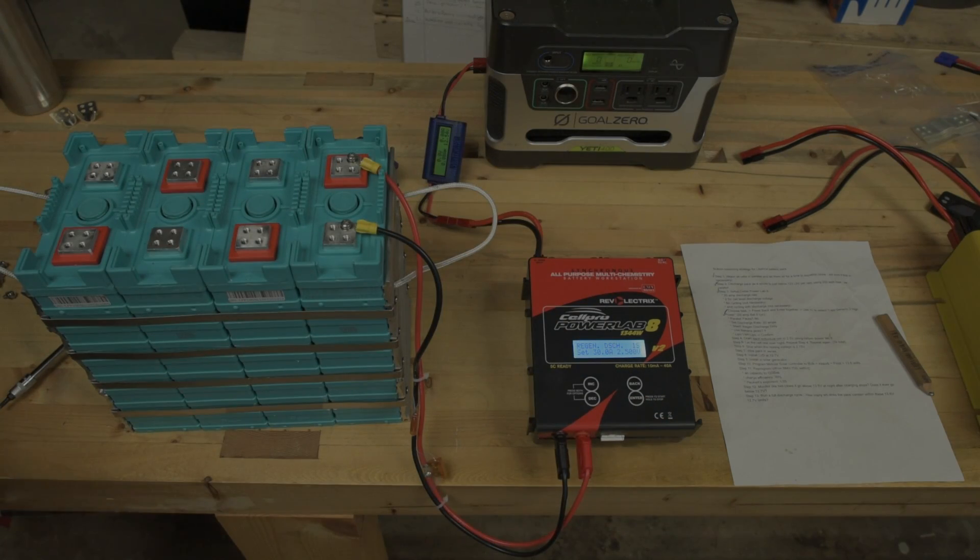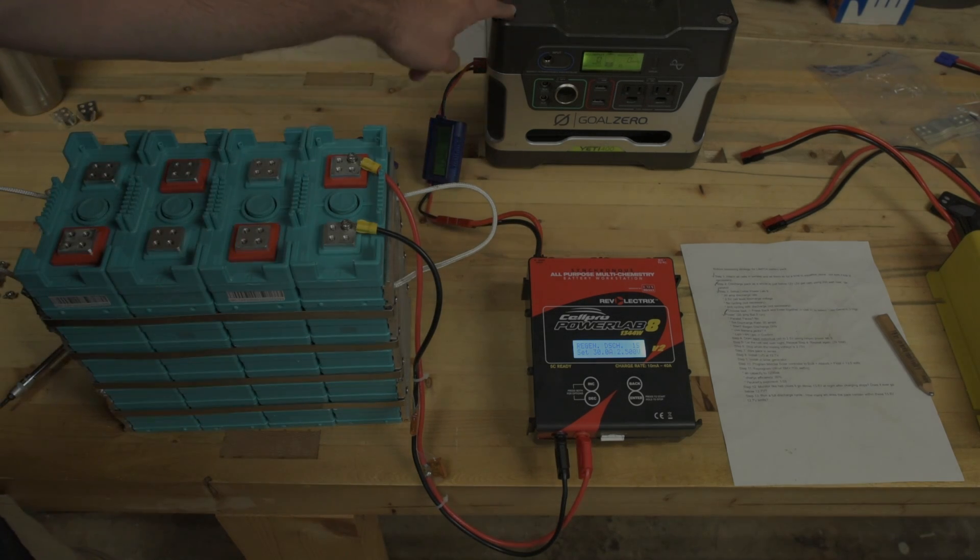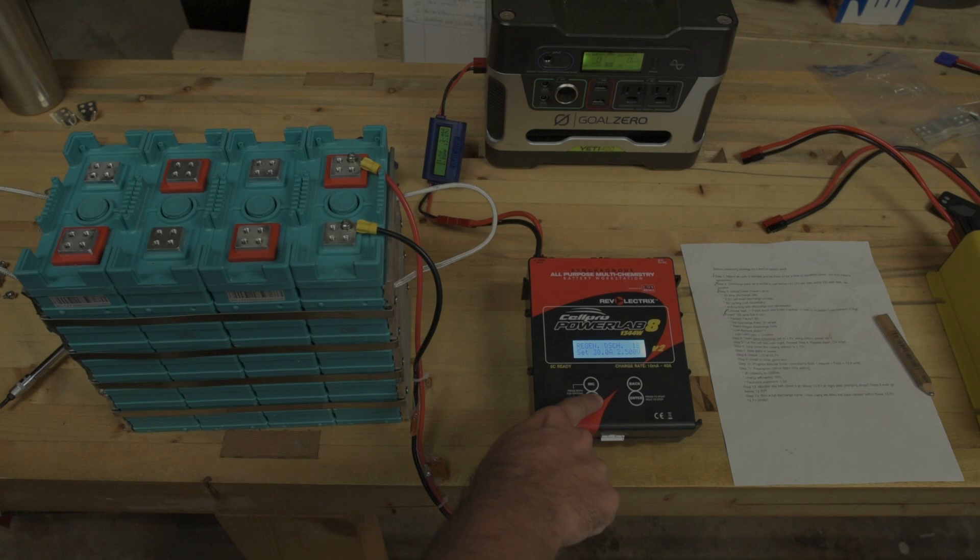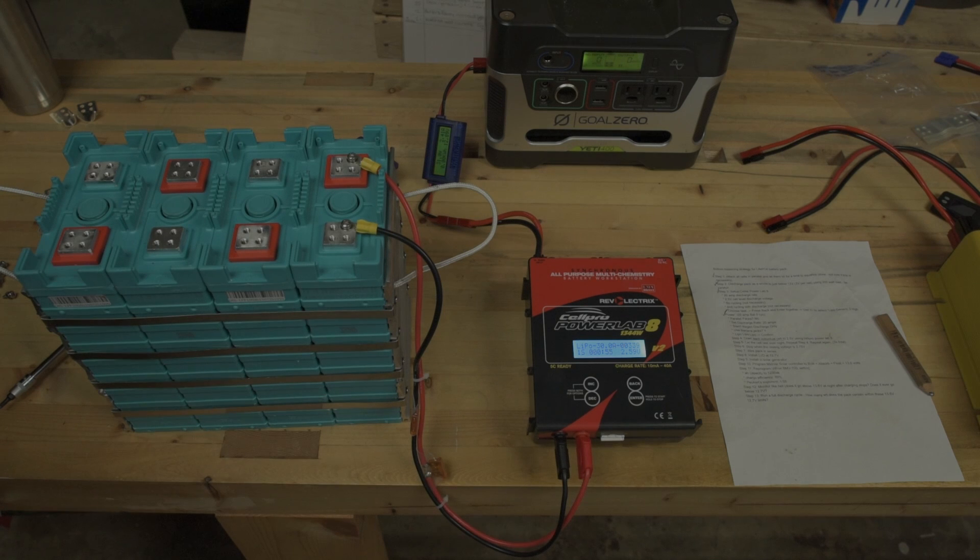This doesn't put a whole lot of energy back into the Goal Zero. I think I probably could have stood to only remove a half hour worth of energy, maybe 100 watt-hours instead of 200 watt-hours. I don't really like keeping my AGM battery at less than 50 percent, so it'll be all right though. Let's see how long this is going to take.